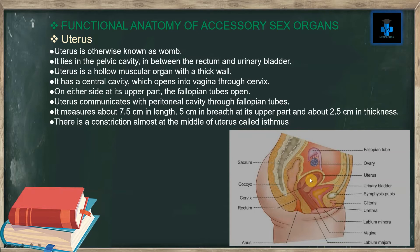The uterus is otherwise known as the womb. It lies in the pelvic cavity in between the rectum and urinary bladder. Here we can appreciate the pelvic cavity, with the rectum on one side and urinary bladder on the other, and you can appreciate the uterus in between.